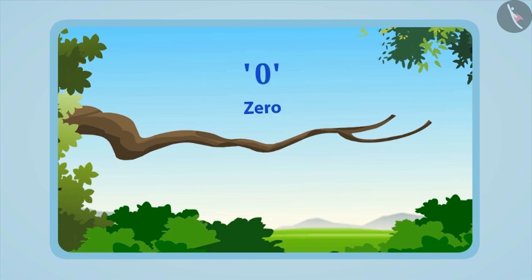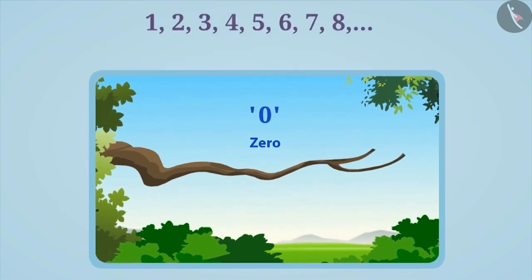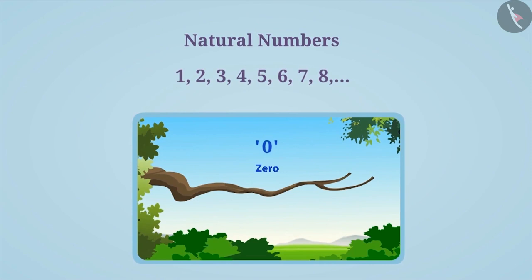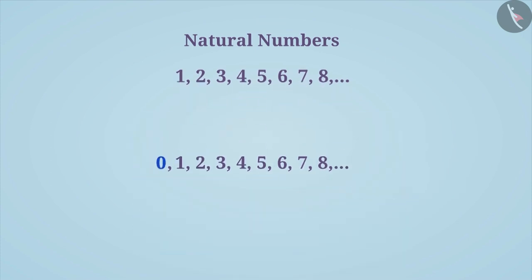It is expressed with number 0. Now you might have understood that 0 is also very useful for us, just like natural numbers. Therefore, we make a new collection or group of numbers by adding 0 to the list of natural numbers. This collection is called whole numbers.